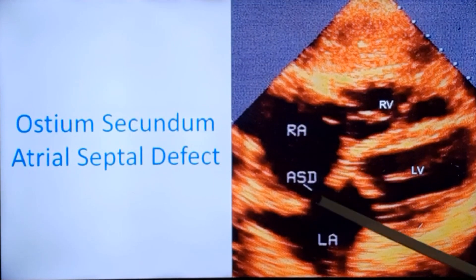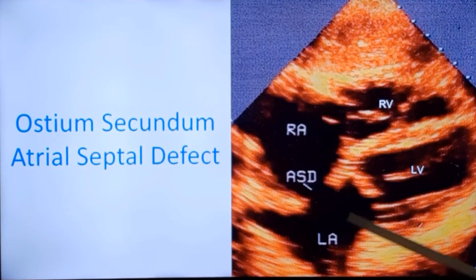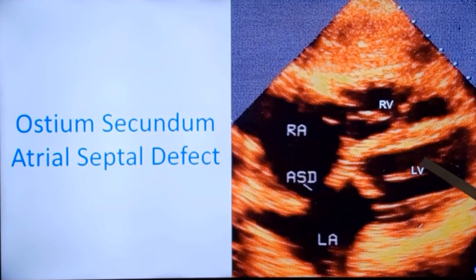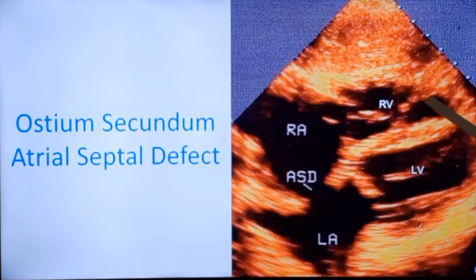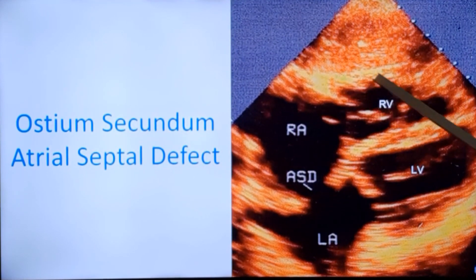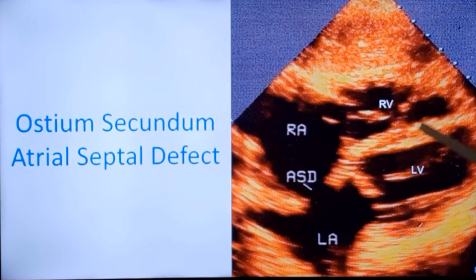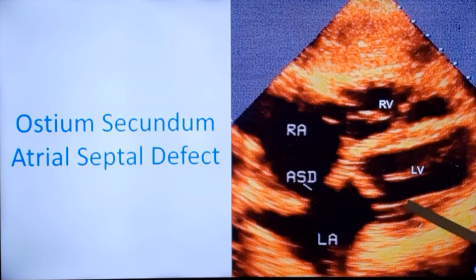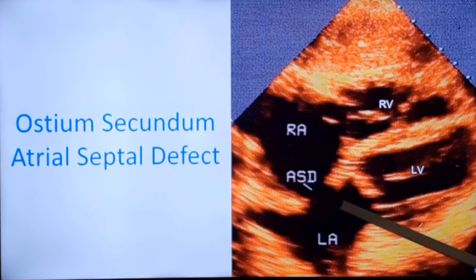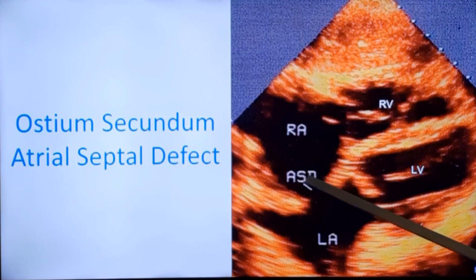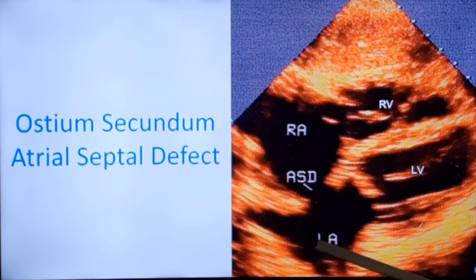This is the right atrium, left atrium, left ventricle, interventricular septum, right ventricle, and this is the right ventricular free wall. This will be the left ventricular wall, and this is the atrial septal defect — secundum atrial septal defect.